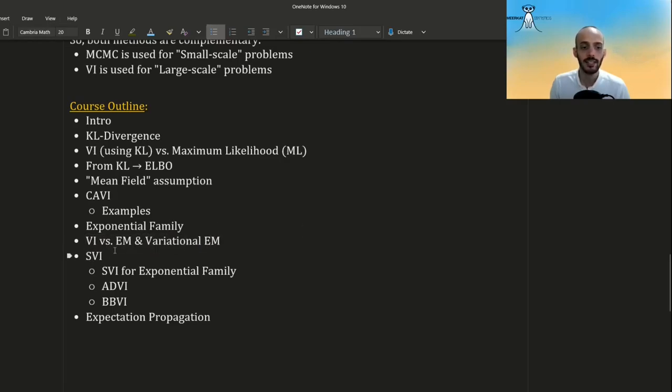We will then look at stochastic variational inference, especially stochastic variational inference for exponential family, but then other types of SVIs such as automatic differentiation VI and black box VI. Finally, we will look at expectation propagation, which is a similar algorithm that is closely related to variational inference. So quite a lot of work ahead of us. This is all for this video. I hope you enjoyed and see you in the next one.